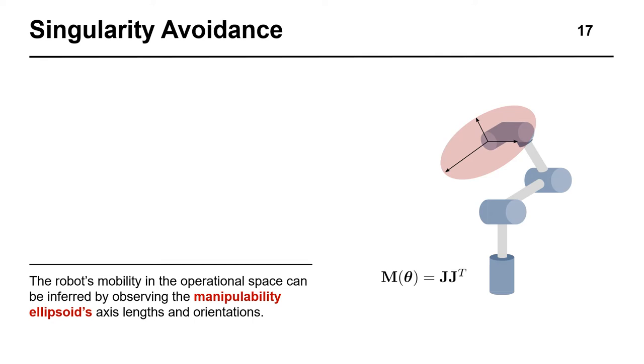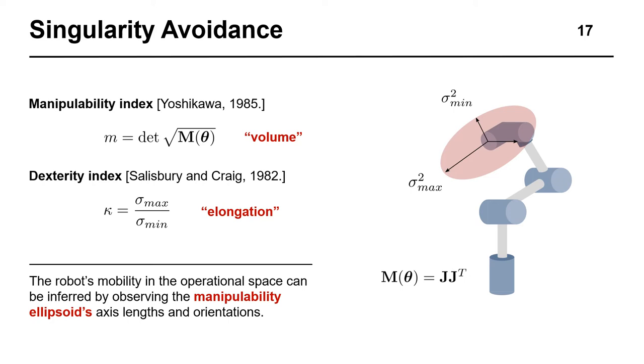In fact, these lengths are exactly equal to the squared singular values of the robot's Jacobian, giving a clear geometrical interpretation of its conditioning. This interpretation has previously been used to develop indices which are optimized as part of a planning or control algorithm. The manipulability index is proportional to the volume of the manipulability ellipsoid, and is often used with gradient-based optimization methods. Another common index is the so-called dexterity index, which can be related to the ellipsoid's elongation.